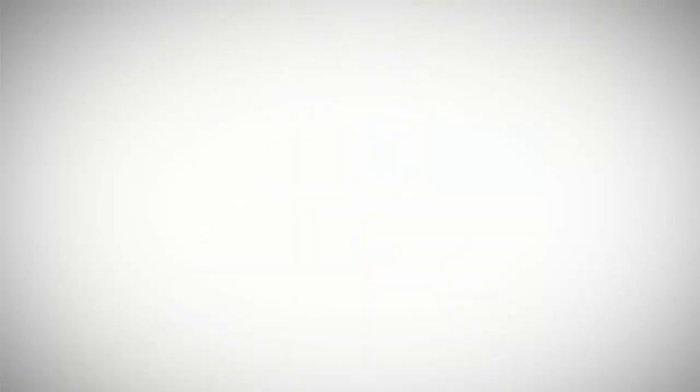The diagram gives us a quadrilateral, and we see the angles marked 110, z, 110, and 50. The question asks us to figure out what the angle z is equal to. Now we learned before that interior angles of a triangle add up to 180 degrees.